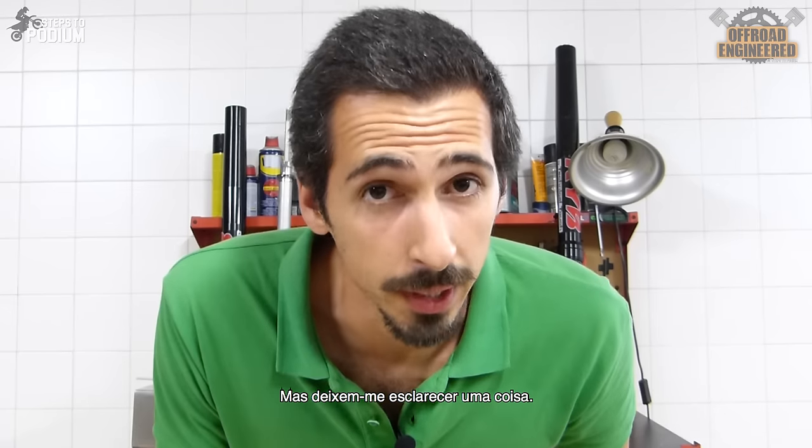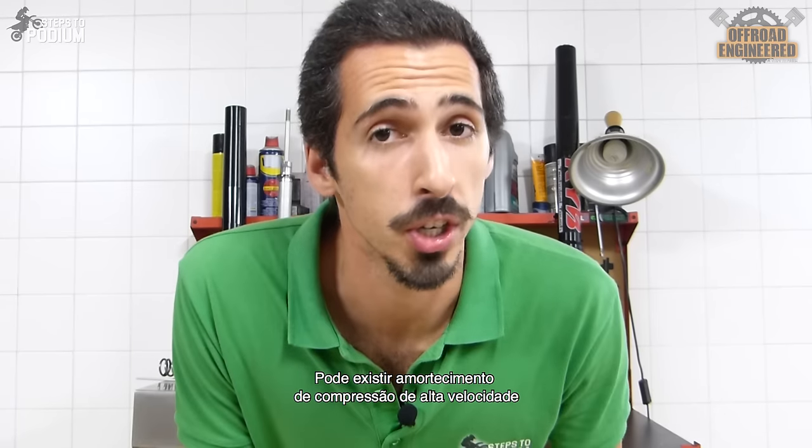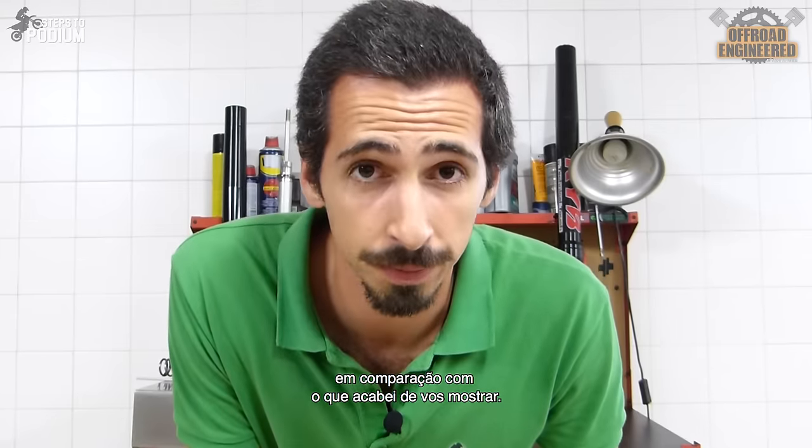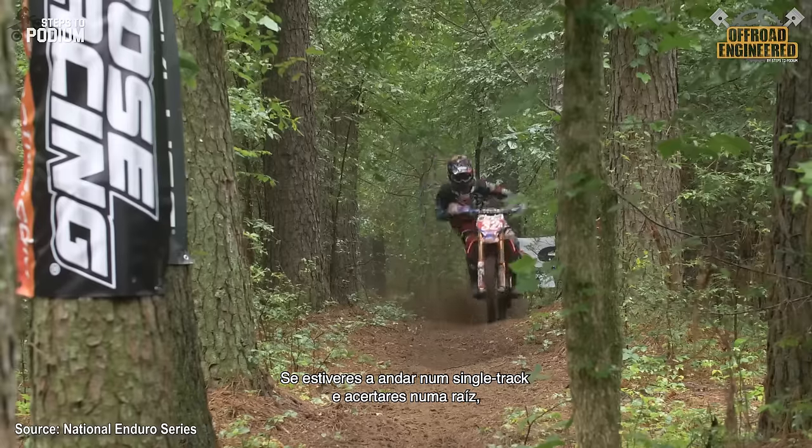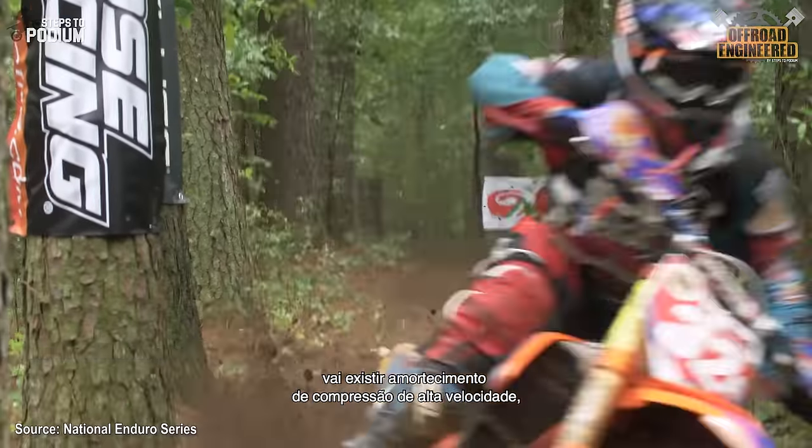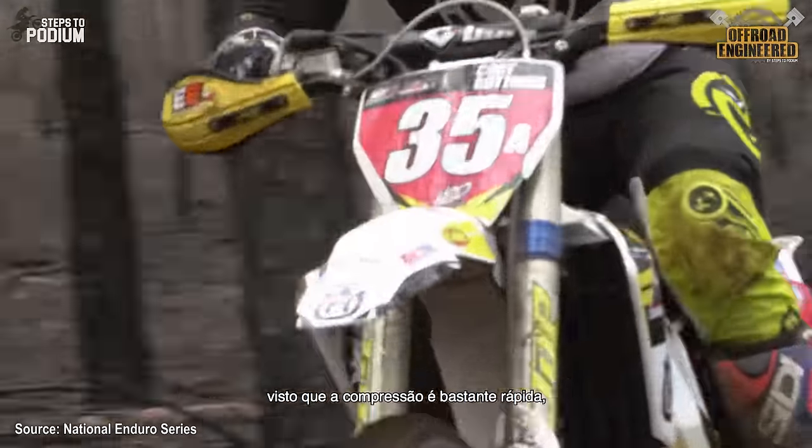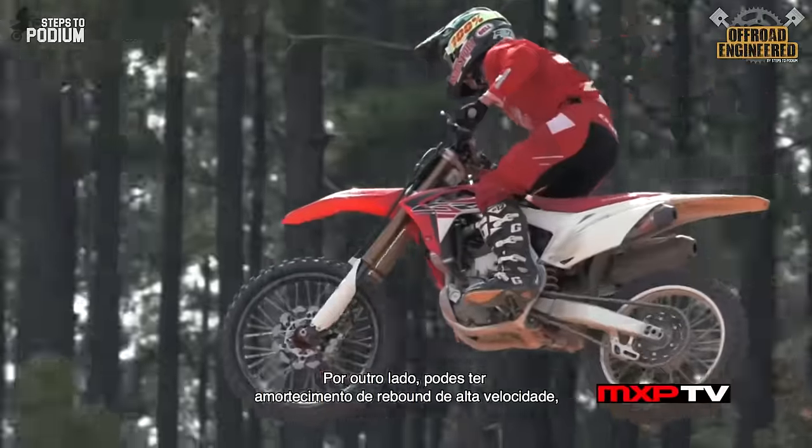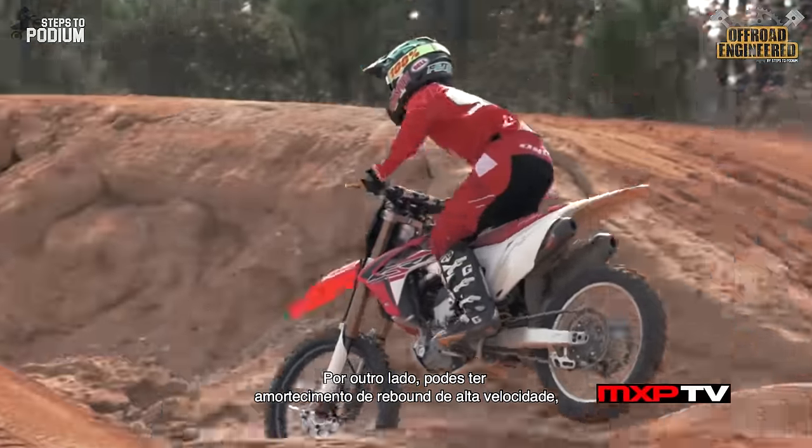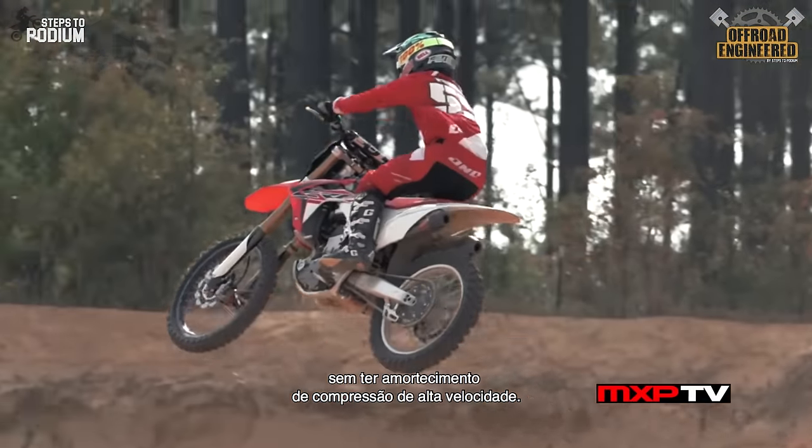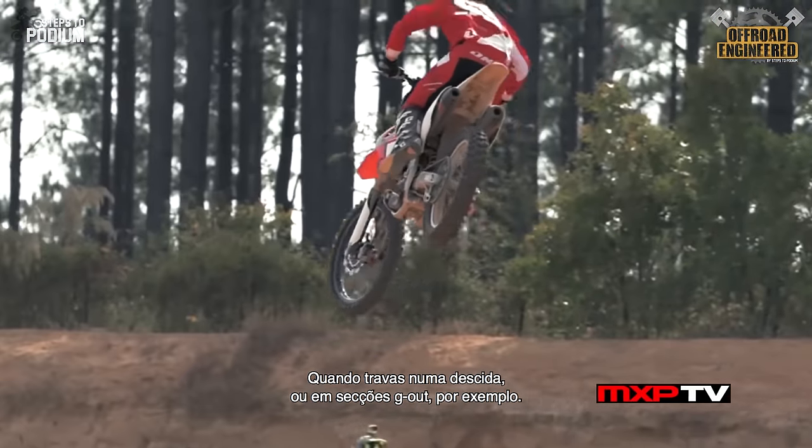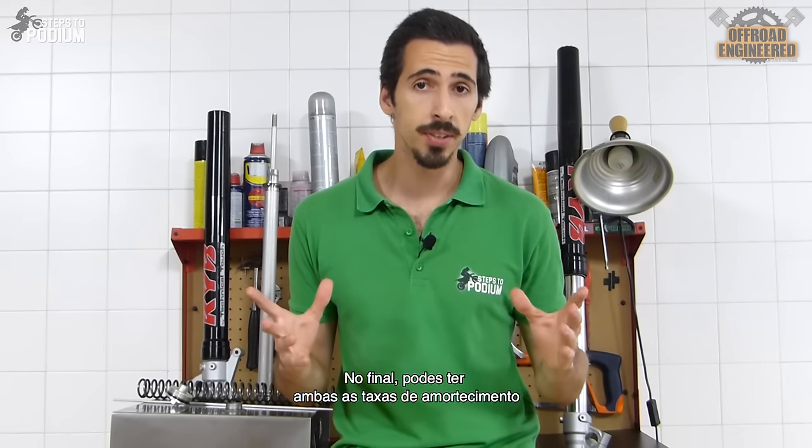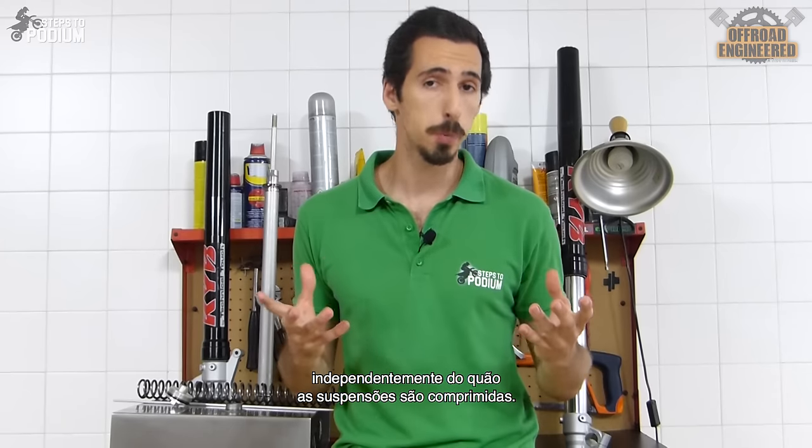But let me clarify something. You can have high-speed compression damping, but not high-speed rebound damping in comparison to what I just showed you. If you're riding on a single track and you hit a nasty tree root, you will have high-speed compression damping since the compression is quite fast, but because the forks weren't compressed that much, you won't have high-speed rebound damping. And on the other hand, you can have high-speed rebound damping without having high-speed compression damping, like when you're braking on a downhill or on G-out sections. In the end, you can have both damping rates despite of how much your suspensions get compressed.